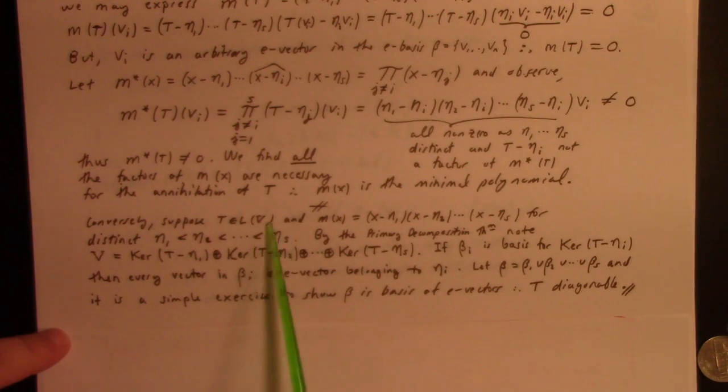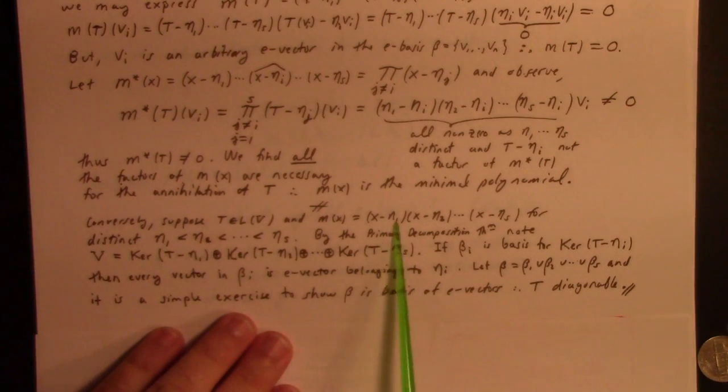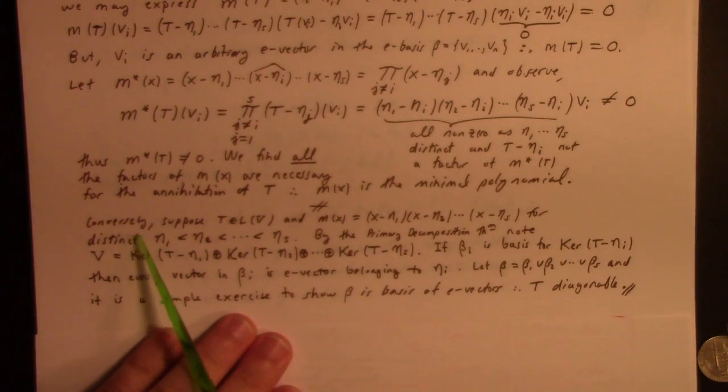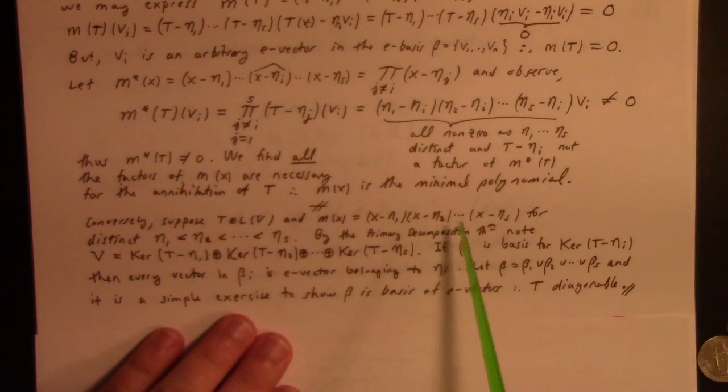Conversely, if you have an endomorphism and you have the minimal polynomial is the product of distinct linear factors, like so, all right? And again, I shouldn't say this - this is too real. Then, by the primary decomposition theorem, note that v is, because these are the prime factors, linear factors are prime factors. These are not repeated. So, that makes this like the p1, the p2, the pS. And so, by the primary decomposition, we get v is the direct sum of the kernels of these guys, respectively.